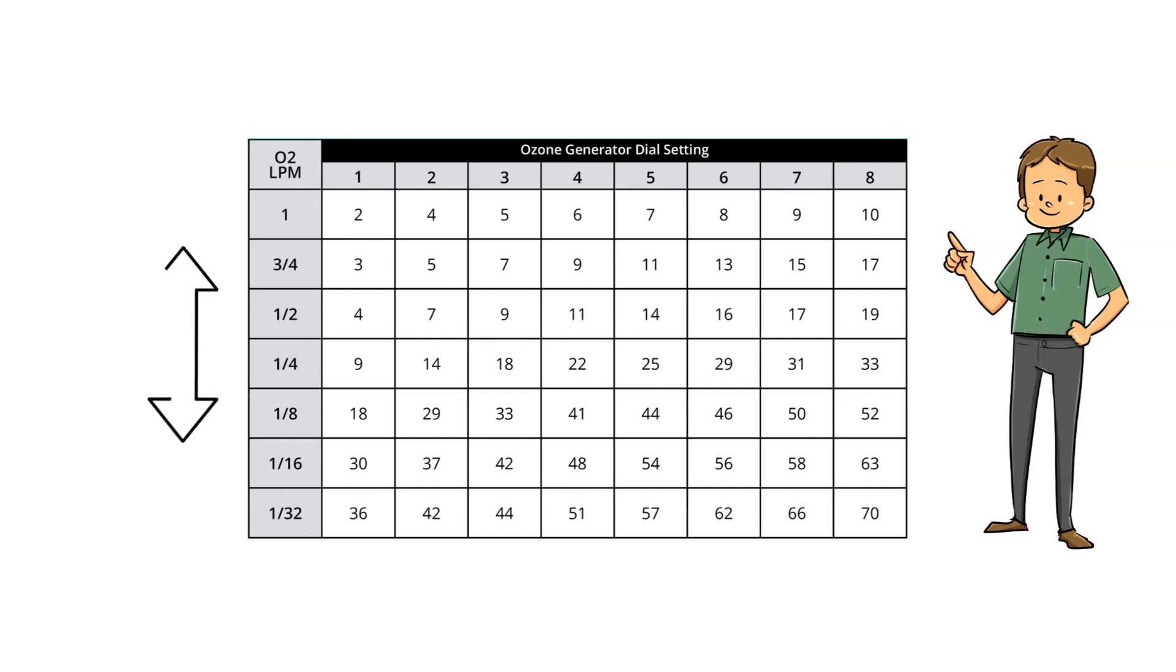Along the vertical on the left-hand side you will find the flow rate setting which corresponds to your oxygen source. Horizontally at the top you will find the dial settings for the O3 Elite series or the power setting for the arc series.